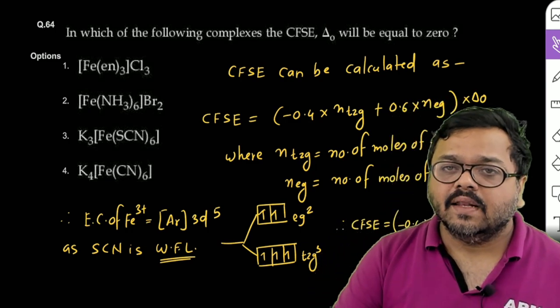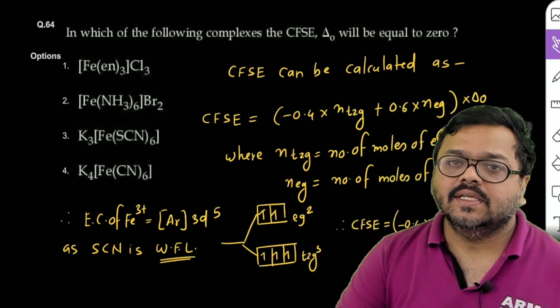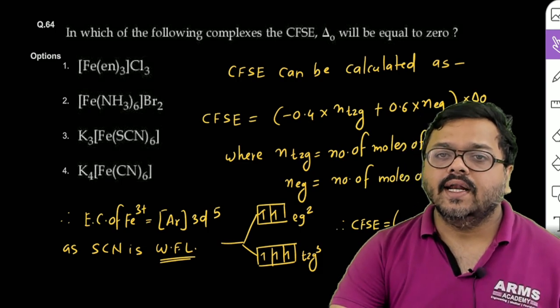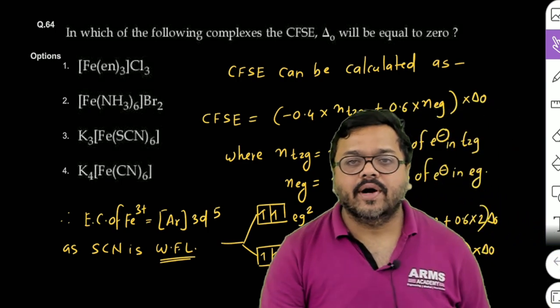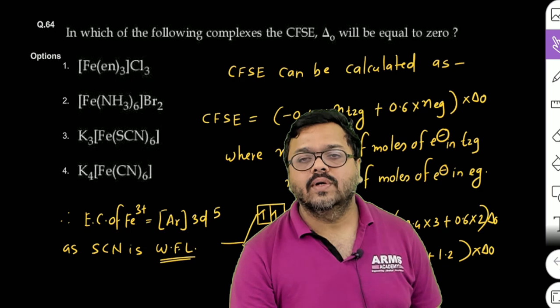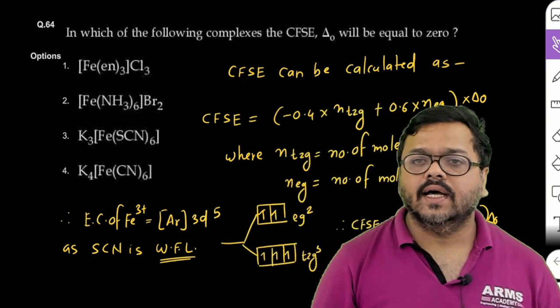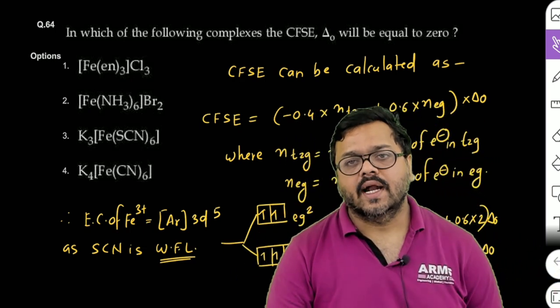All the complexes are given as octahedral complexes. So CFSE can be calculated by the formula: CFSE is equal to minus 0.4 into NT2G plus 0.6 into NEG into delta O, where delta O is CFSE for octahedral complexes.